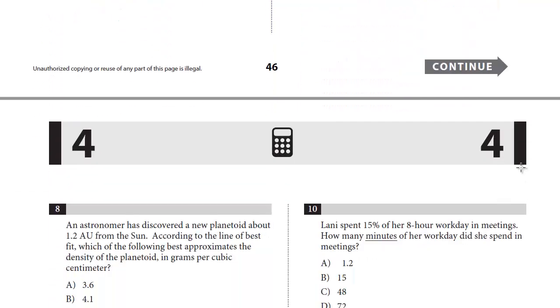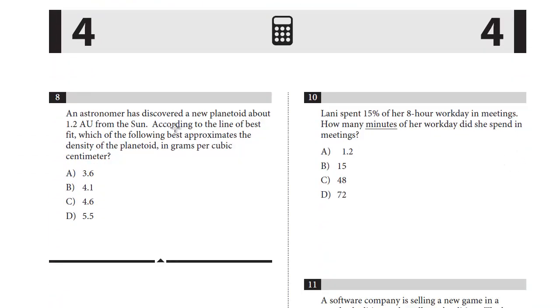And let's do number 8 because it's a two-part question. An astronomer has discovered a new planetoid about 1.2 AU from the sun. According to the line of best fit, which of the following best approximates the density of the planetoid in grams per cubic centimeter? So we just have to find a distance of 1.2 AU and then match it up to the line of best fit